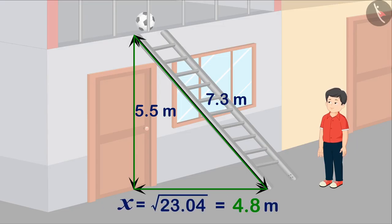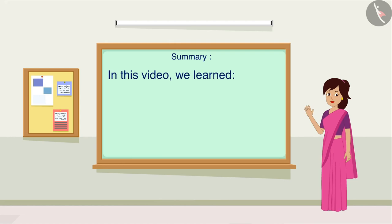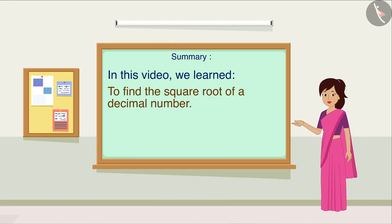This gives us the value of x as 4.8. This means that Vishal has placed the ladder at a distance of 4.8 meters from the wall to climb the roof. So, in this video, we learned to find the square root of a decimal number.